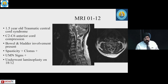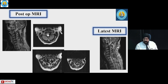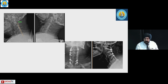Another case involved a 1.5-year-old traumatic central cord syndrome with anterior cord compression, bowel and bladder involvement, and Hoffman's signs. The patient had undergone laminoplasty but had progressive neurological deterioration over the last 6 months. Residual compression was visible and a posterior surgical approach was taken with good outcomes.